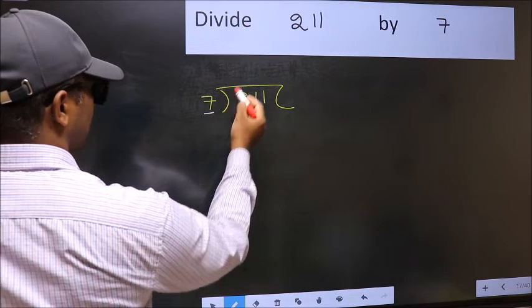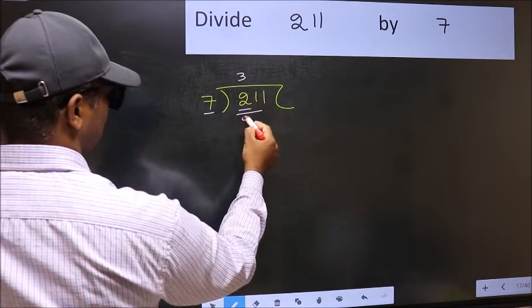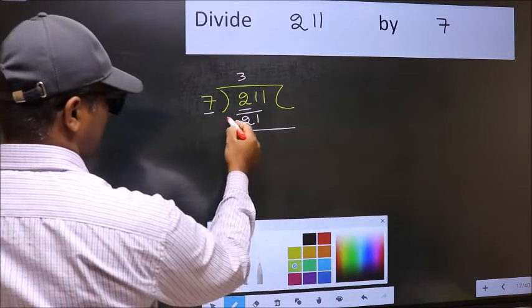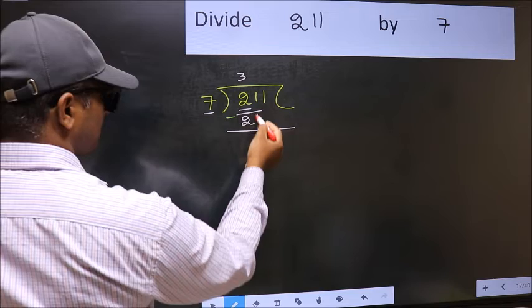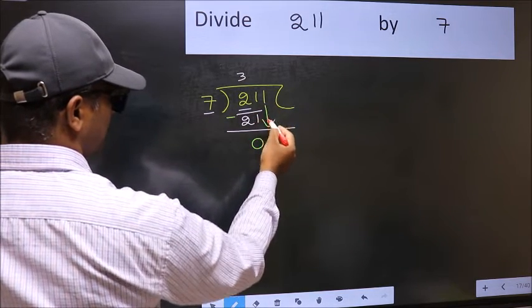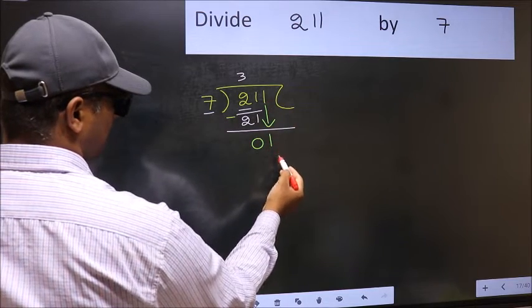When do we get 21 in the 7 table? 7 threes, 21. Now you should subtract. 21 minus 21, 0. After this, bring down the beside number. So 1 down.